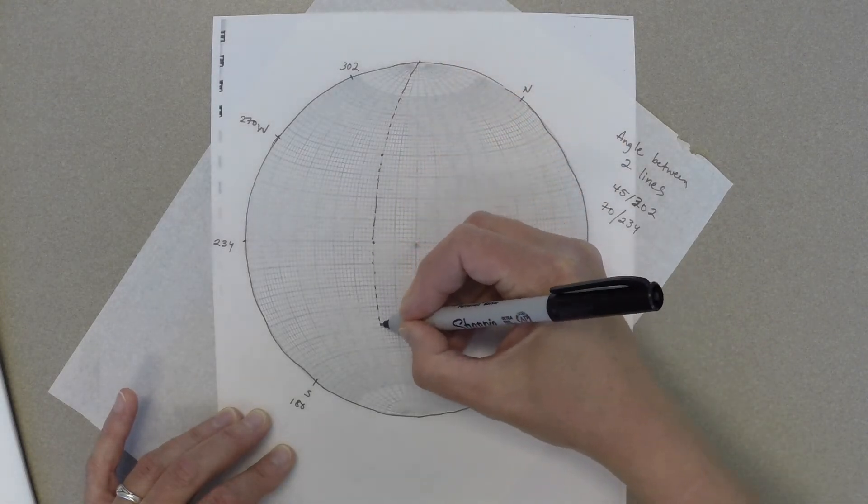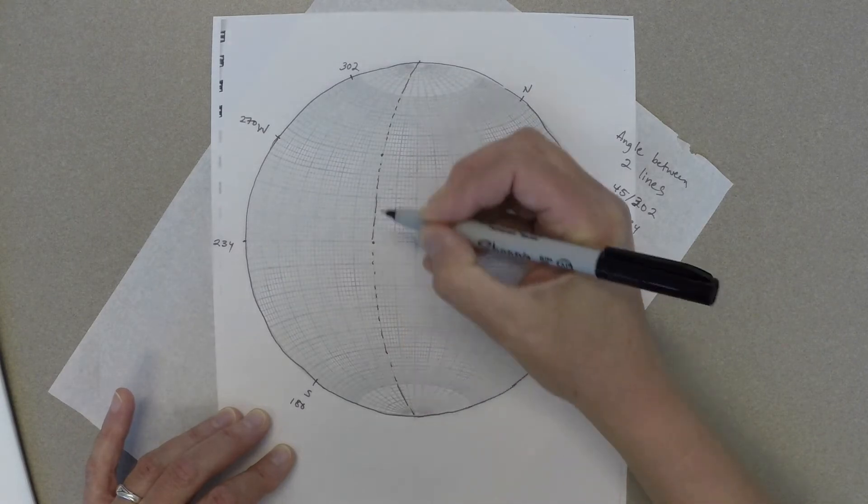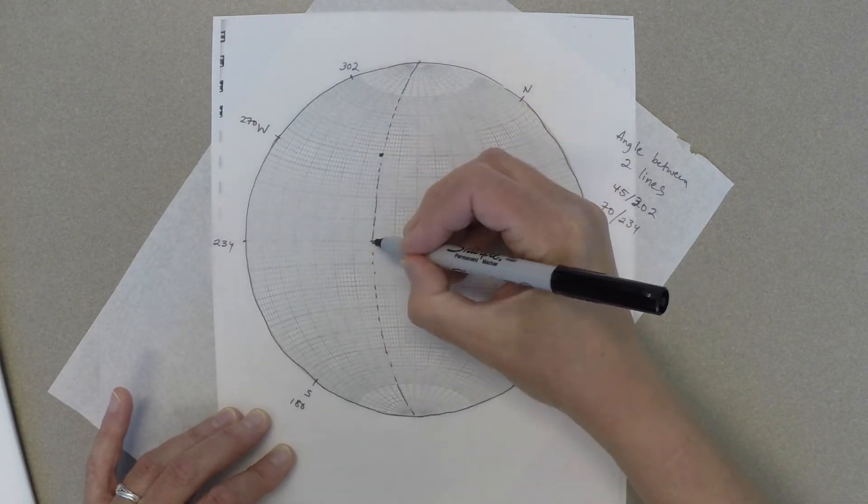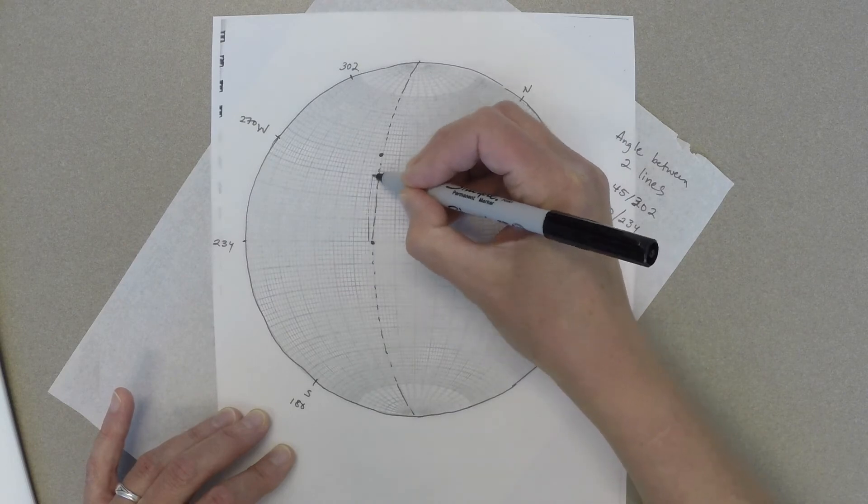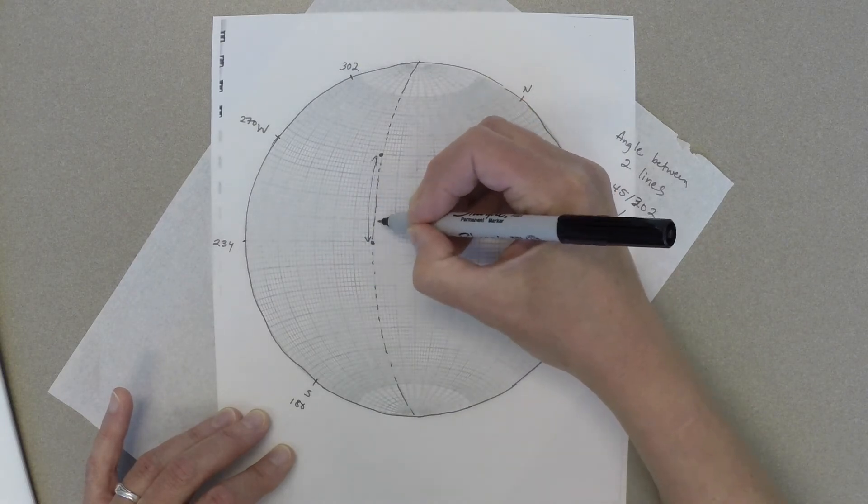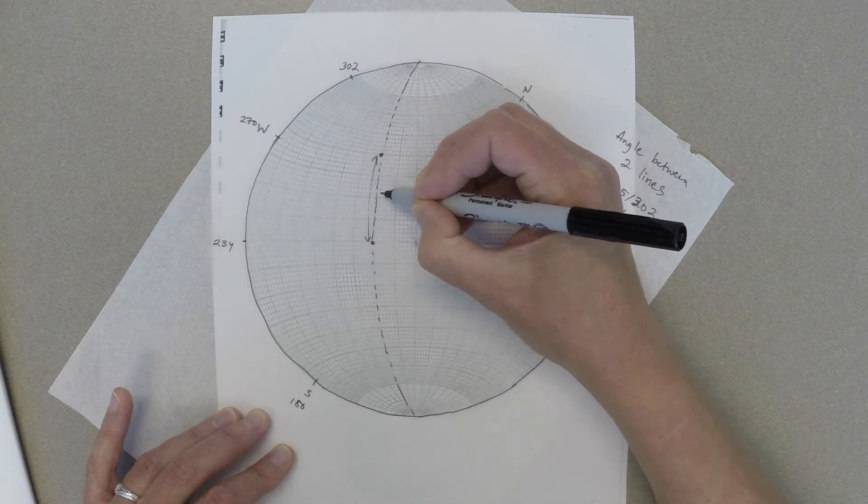Now, we could figure out the strike and dip of that plane, but that's not what we're interested in doing here. Right now, what we're interested in doing is counting the angle between those two dots along that great circle.